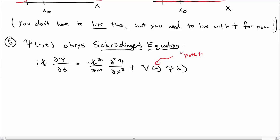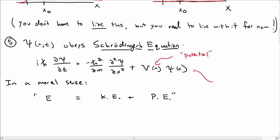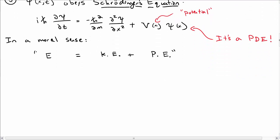V of x is called the potential, and it describes the specifics of whatever situation you're in. In a moral sense, the Schrödinger equation is telling you that energy equals kinetic energy plus potential energy, so V of x is like the potential energy for your system. By the way, Schrödinger's equation is a PDE, so we're going to have to use techniques necessary for solving PDEs.